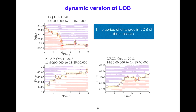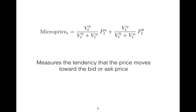Let's see the dynamic version of the limit order book. As you see, it's a time series. Now, the most important variable in high-frequency trading is the microprice. V stands for volume, B is bid, A is ask, and it is a linear combination of them. It measures the tendency of the price to move toward the bid or ask price. It's a very important variable.